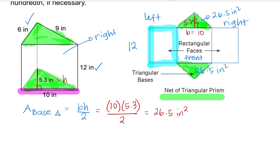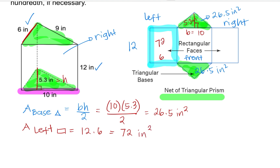To find the area of the left side: the base of this rectangle is 6 inches. So the area of the left side of the rectangle is going to be 12 times 6, and 12 times 6 is 72 inches squared.